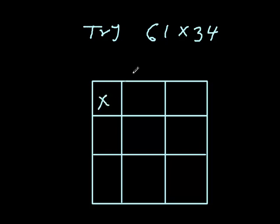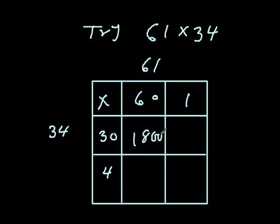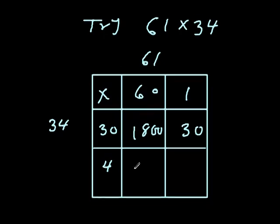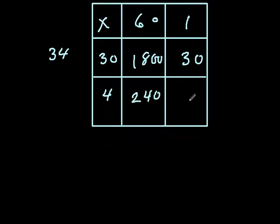What we do is we have got 61 and 34. 61 should be split up in 6 tens and a unit, and 34 should be 3 tens and 4 units. When I times together I get 1800, I get 30, and then I get 200, 40 and 4. Adding these four numbers together will give me 2074.